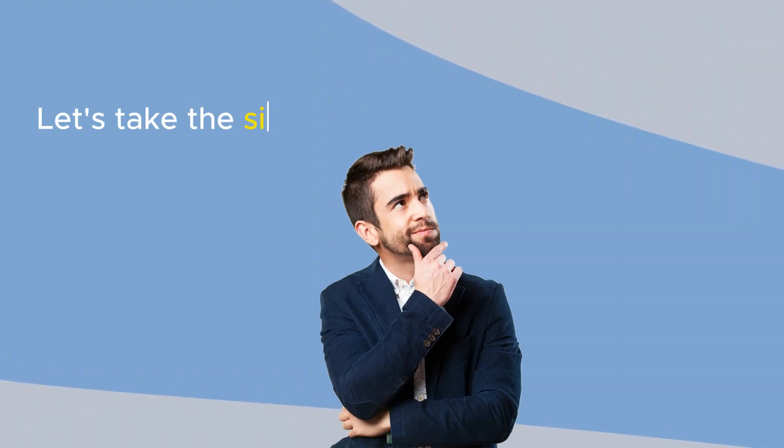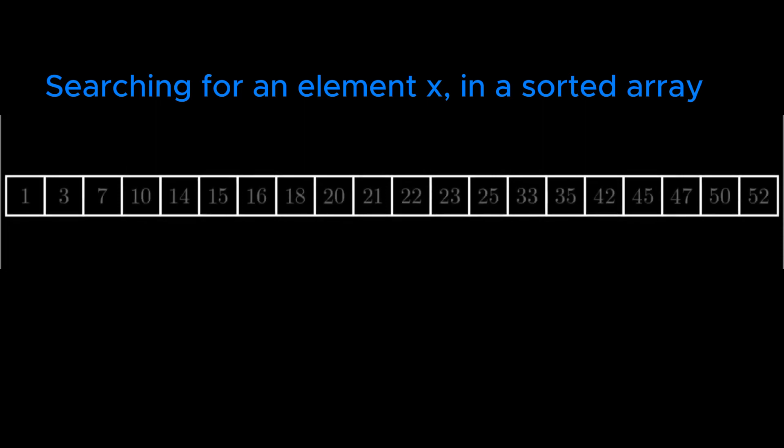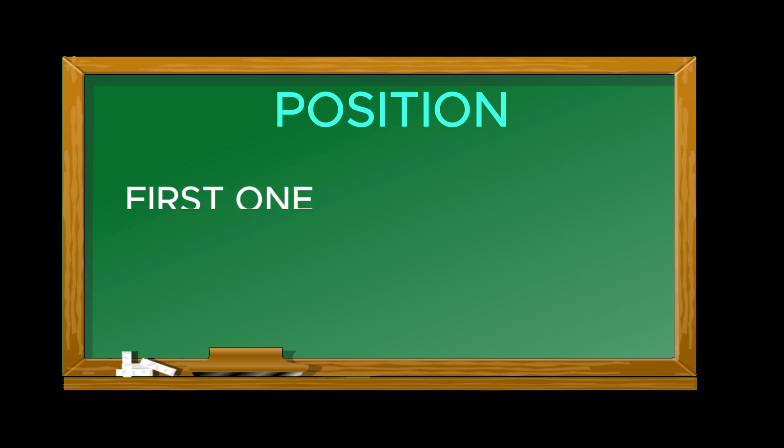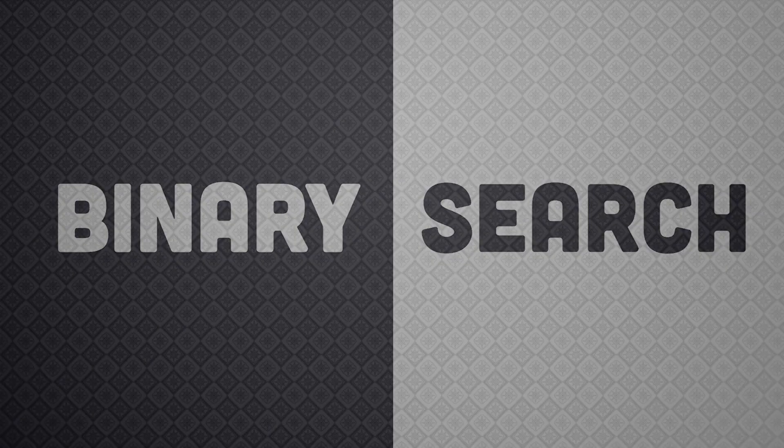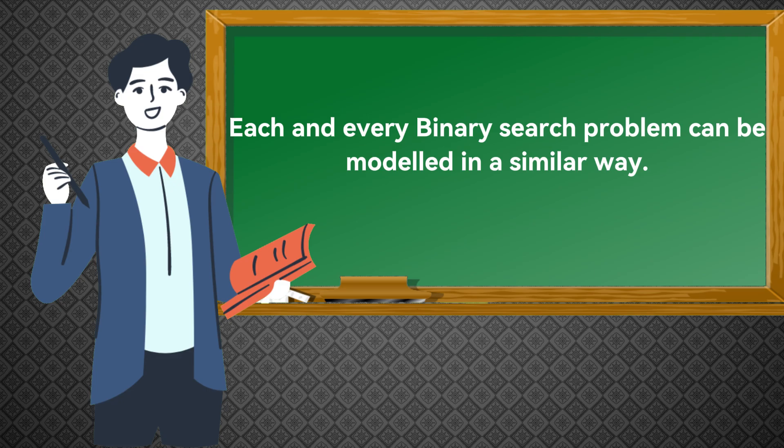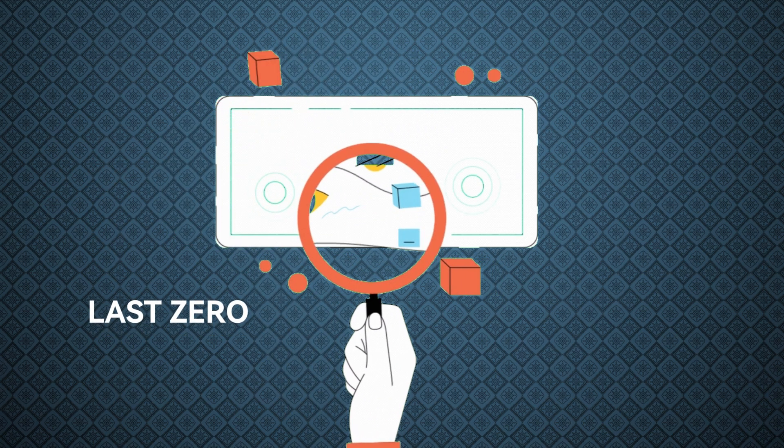Let's take the simplest example to understand this. Searching for an element x in a sorted array. If we replace all the elements strictly smaller than x by 0 and all the elements greater than or equal to x by 1, then all we need to do is find the position of the first one and check whether the element there is equal to x or not. Now each and every binary search problem can be modeled in a similar way.